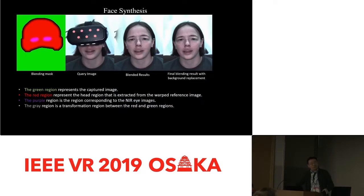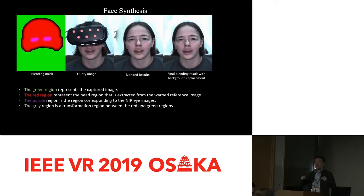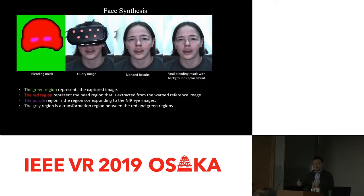Here is our final composition mask. The green part is the original image — we leave it as is. The red region is copied from the reference image retrieved from our dataset in which that person is not wearing the head-mounted display. The purple region covers the eye regions from the two eye cameras. There are also gray regions used for blending.